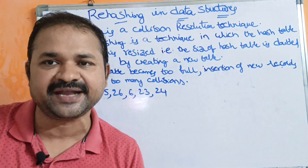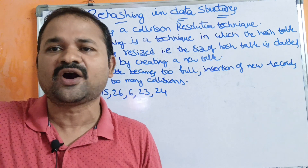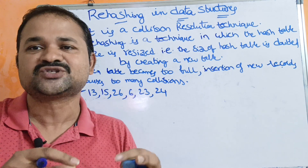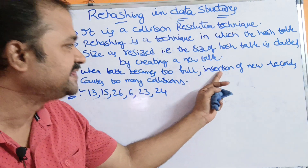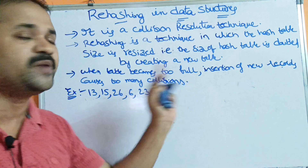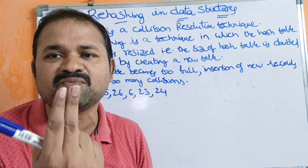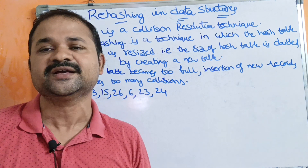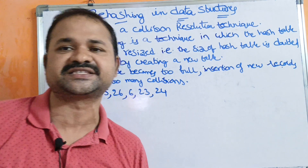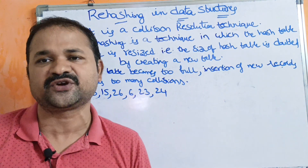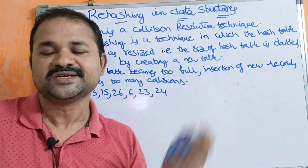Rehashing needs to be implemented when the hash table becomes too full — for example, when 70%, 80%, or 90% of the hash table is occupied. If most fields are already filled and we try to insert new records, it causes too many collisions. For instance, if the table size is 10 and already contains 8 records with only 2 empty cells, inserting 3 more records requires too many collisions and the process becomes quite slow. To overcome this, we must double the size of the hash table.